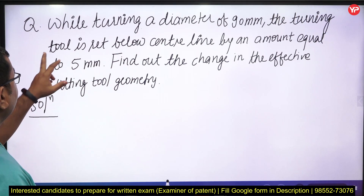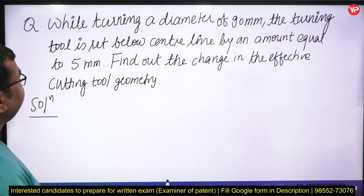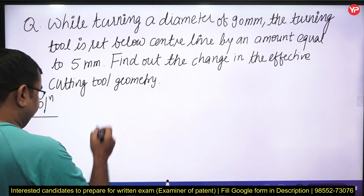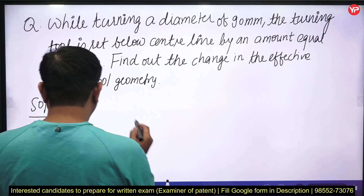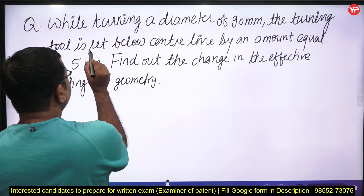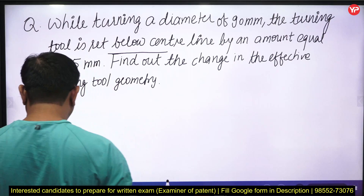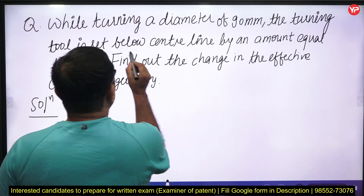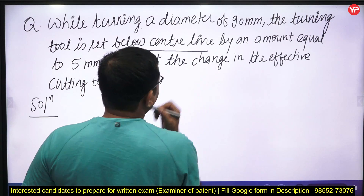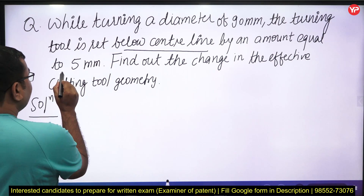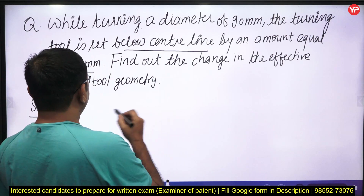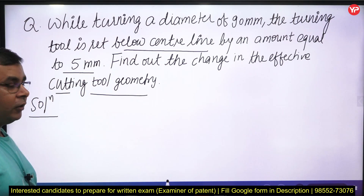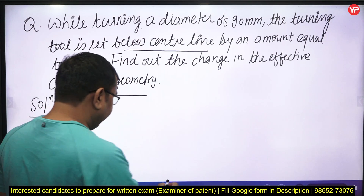Let's see what the question is. While turning a diameter of 90 mm, the turning tool is set below the centerline by an amount equal to 5 mm. We need to find out the change in effective cutting tool geometry. So let's see how to solve this question.